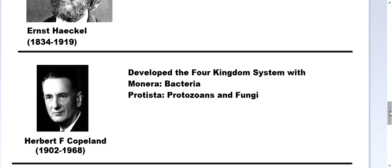Then came the four kingdom classification by Herbert F. Copeland (1902–1968), who added a new kingdom Monera. As people discovered that bacteria were really different from the other Protista — some bacteria could live under very high temperatures and high salinity — bacteria were separated into kingdom Monera, while the rest (protozoa and fungi) remained in Protista.